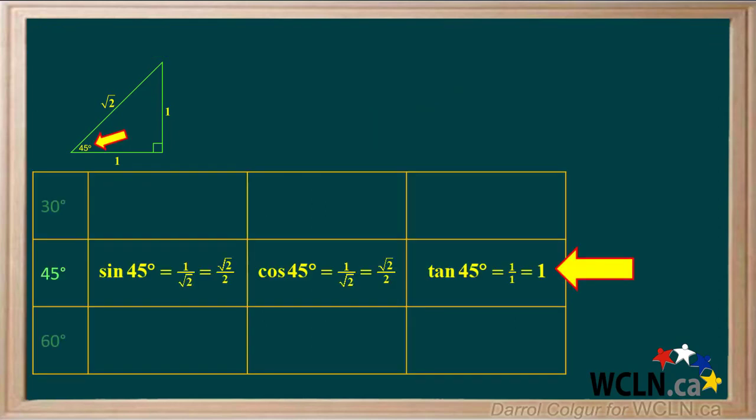Using the 45-45-90 triangle, we get the exact sine, cosine, and tangent of 45 degrees. See how each of these are obtained from the diagram.